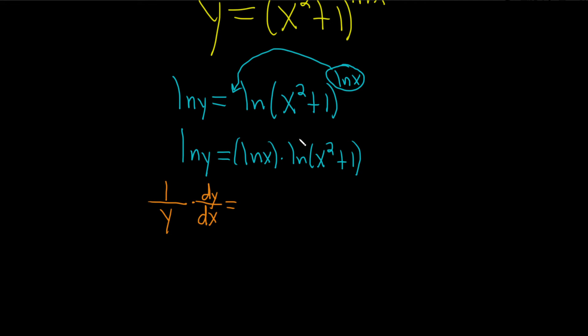For this piece here, it looks like we're going to have to use the Product Rule. Recall if you have two functions, say f and g, and you want the derivative, think of f as your first function and g as your second function. So it's the derivative of the first times the second, plus the first times the derivative of the second.